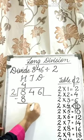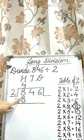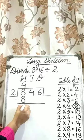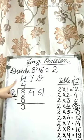Now we need to subtract 8 from 8. 8 minus 8 is equal to 0. We have divided 8 hundreds by 2.